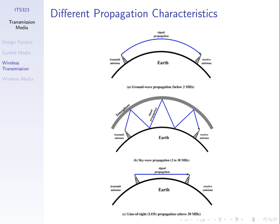For line-of-sight, signals go effectively straight, so to receive the signal the receiver needs to be in line of sight of the transmitter. If you stood at the receiver and could see far enough, you'd be able to see the transmitter. If you go too far around the Earth, you will not receive the signal. Depending upon the frequency, signals propagate in different ways.